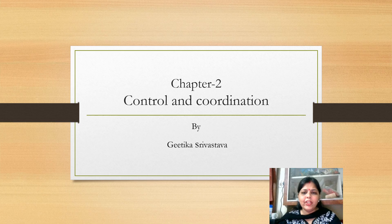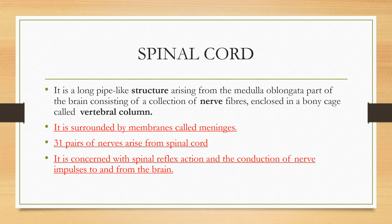The part we will be covering today is the spinal cord and the endocrine system. Previously I told you about the brain and the different nervous systems. Now, the spinal cord is a long pipe-like structure arising from the medulla oblongata part of the brain, consisting of a collection of nerve fibers. It is enclosed in a bony cage called the vertebral column. This spinal cord is surrounded by membranes called meninges. 31 pairs of nerves arise from the spinal cord.